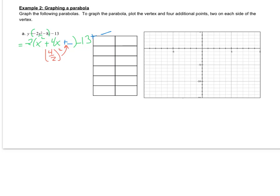So 4 divided by 2 is 2, and squaring that would give me 4. And then I can't forget that that 4 is really being multiplied by that negative 2. So I've added negative 8 so far, so then I need to add a positive 8 on the outside here.